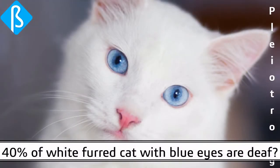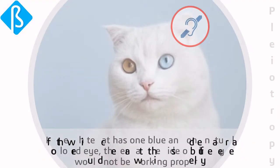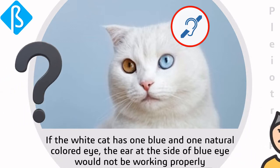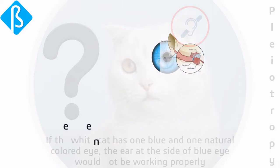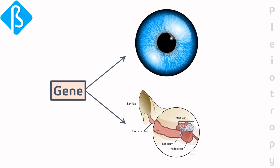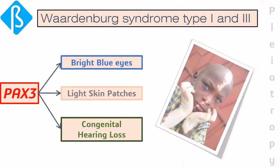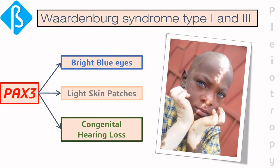Let's understand pleiotropy first. Approximately 40% of white-furred cats with blue eyes are deaf. Even if the white cat has one blue eye and one naturally colored eye, the ear on the side of the blue eye would not be working properly. This happens because the gene responsible for blue eyes is also responsible for decreasing ear canal fluid — one gene responsible for two phenotypes. This is called pleiotropy.